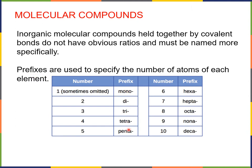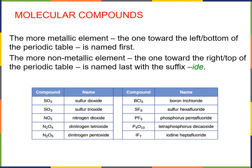The prefixes come from the Greek: mono, di, tri, tetra, penta, hexa, hepta, octa, nona, and deca, and so on. We note here that mono is sometimes omitted — particularly, it's often omitted when the first element in the compound is present in one copy. When we have two elements in a molecular compound, the more metallic element — that is, the one more toward the left or more toward the bottom of the periodic table — is named first. The more non-metallic element, more toward the right or top of the periodic table, is named afterwards and given the suffix -ide.